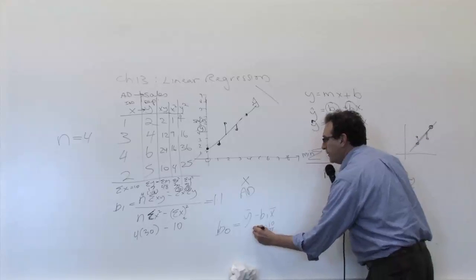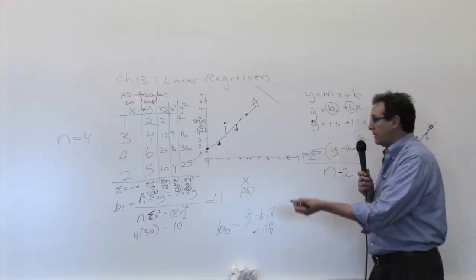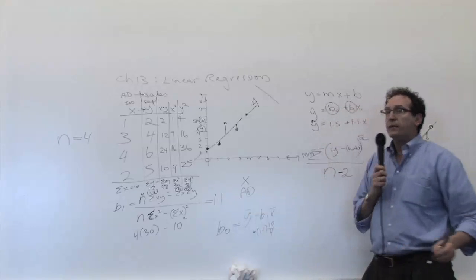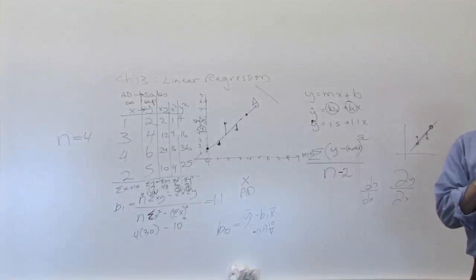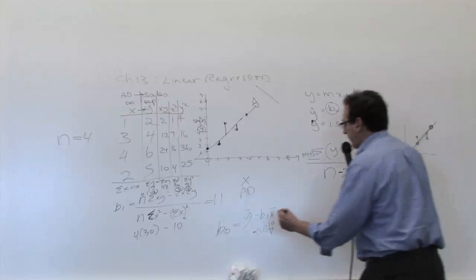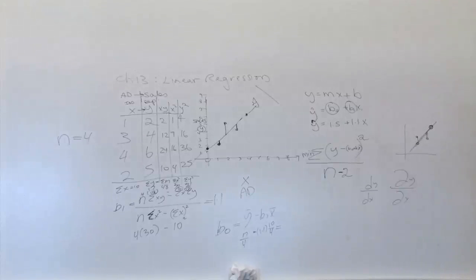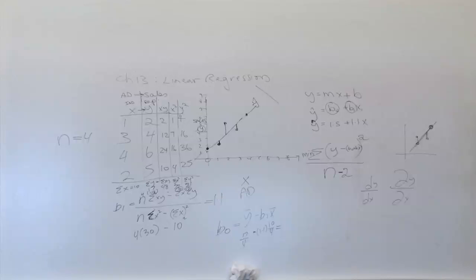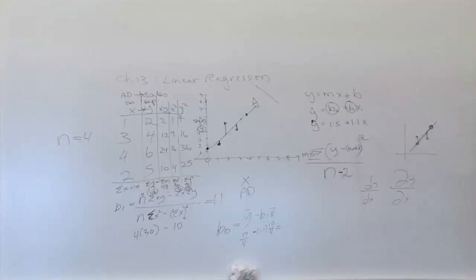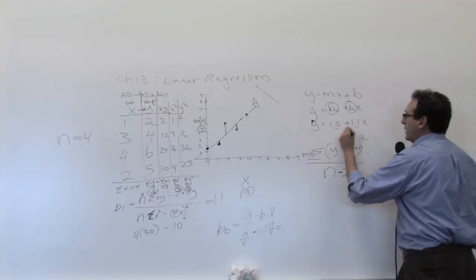Notice the formula has a minus sign built into it. So if the b1 is negative, it's going to be a negative over a negative — but in this case, it's not that case. The y bar stands for the average of the y's, which is 17 divided by 4. And what does this come out to? It comes out to 1.5, which is again what we said before.